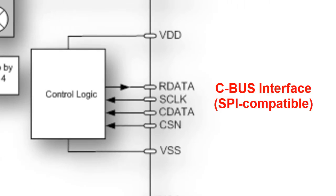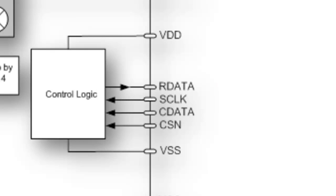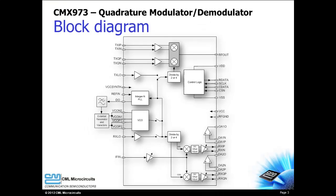Device configuration is performed using a simple SPI compatible serial interface. The CMX973 provides extensive power control for maximum power savings.